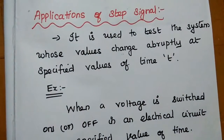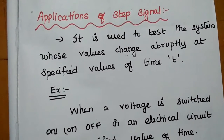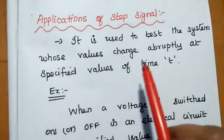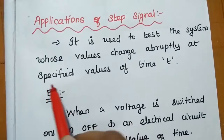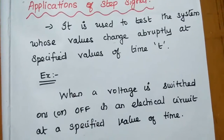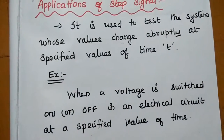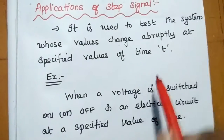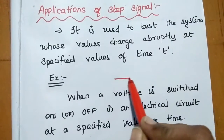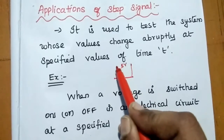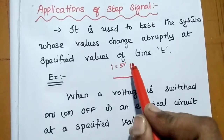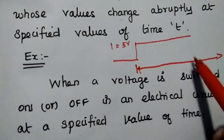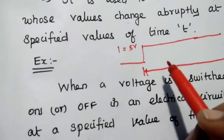The next topic is applications of the step signal. This step signal is mainly used to test systems whose values change appropriately at specified values of time T. For example, when voltage is switched on or off in an electrical circuit at a specified value of time — if a circuit is in off condition and we switch it on to 5 volts for a particular specified duration — the behavior of the system can be tested using this step signal.